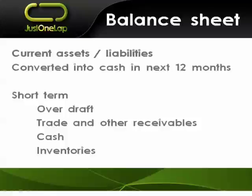You've got broadly two types of assets and liabilities: your current assets and liabilities — those which will be converted into cash in the next 12 months in the case of assets, or need to be paid in the next 12 months. In other words, there's a cash flow associated with them within this financial year.